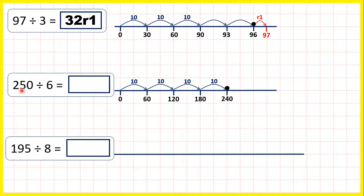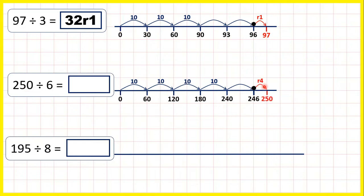Now 240 is close to 250. So instead of counting in steps of 10 times 6, let's just add another 1 jump of 6. That takes us to 246. But if we jumped another 6, we would get to 252, and that would be too many. So from 246, to get to 250, we need to count on another 4. So that extra 4 is our remainder.